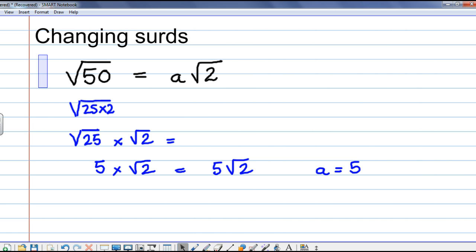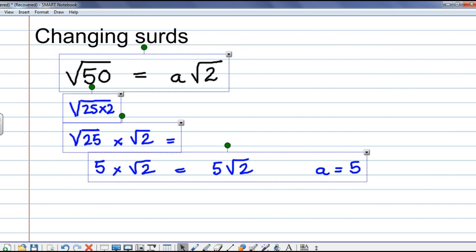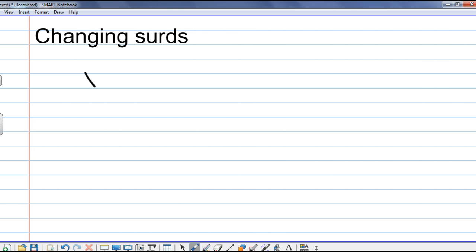Let's look at another example of that. So, we're going to write root 108 as some multiple of root 3. Now, the clue is, it tells us we want root 3 in our answer. So, I'm going to write 108 as something times 3.